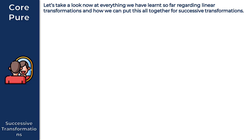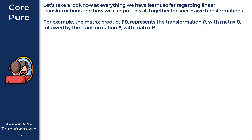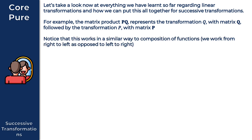In this video, we're going to take a look at successive transformations. So let's take a look at everything that we have learned so far regarding linear transformations and how we can put this all together for successive transformations. The matrix product PQ represents the transformation Q with matrix Q followed by the transformation P with matrix P. This works in a similar way to composition of functions — we work from right to left, as opposed to left to right.